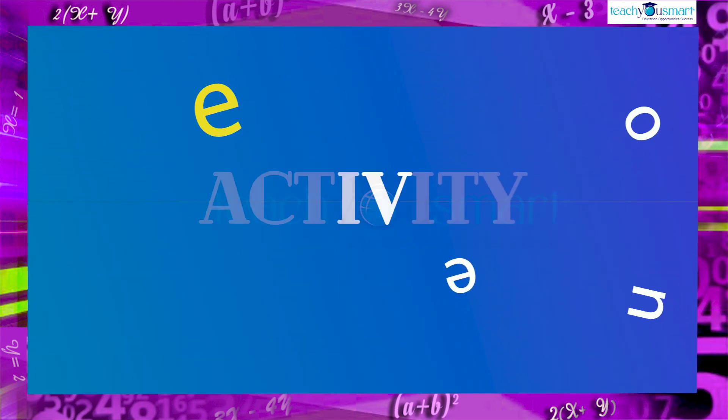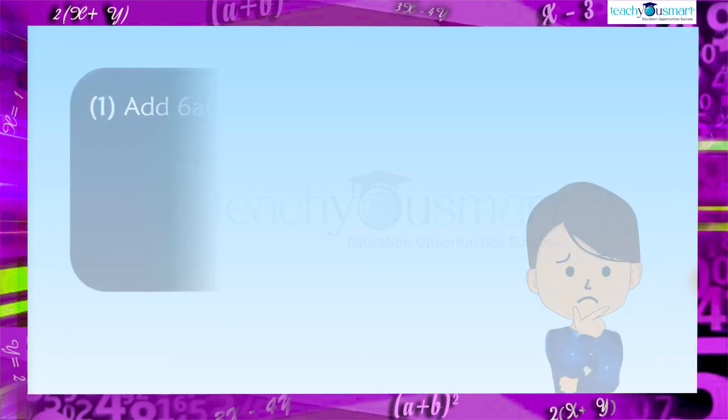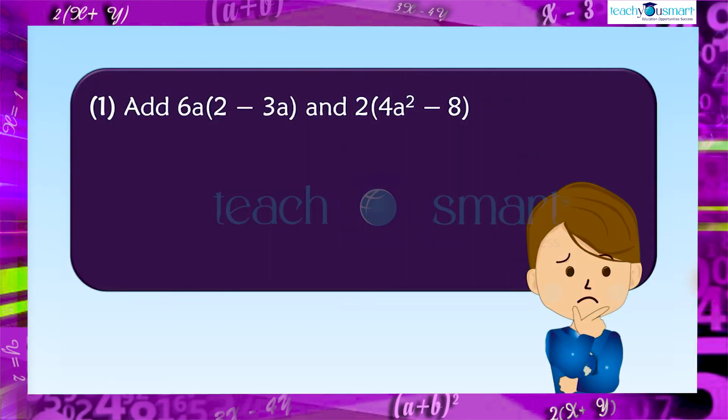Before winding up, let's check how much you understood by doing an activity. Question 1: Add 6a multiplied by 2 minus 3a, and 2 multiplied by 4a squared minus 8.